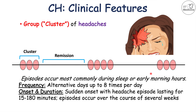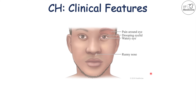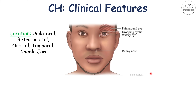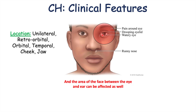Episodes can occur over the course of several weeks. The location of cluster headaches is most often unilateral — occurring on one side of the head, in and around the eye, retroorbital, in the temporal area, forehead, cheek, or jaw. The pain is very severe, often awakening patients from sleep, and the quality is a constant ache or stabbing pain. Some patients describe feeling like the eye is being pushed out.